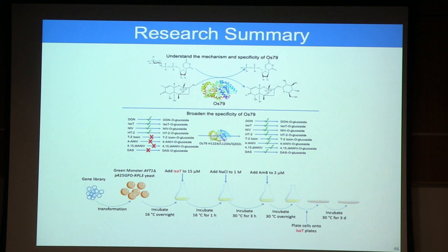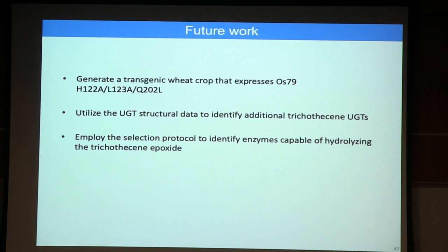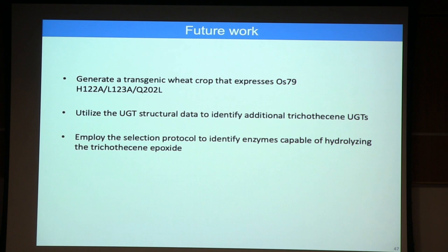In summary: I generated structural information on OS79, the UDP glucosyltransferase that glycosylates trichothecines, and broadened its specificity. This enzyme was patented and can hopefully provide resistance to a wide range of Fusarium species. I also developed a selection protocol to identify enzymes that can break the epoxide bond, which can treat already harvested grain. Future work includes generating a transgenic wheat or barley crop expressing the engineered enzyme, using structural data to identify additional broad-specificity UGTs, and using the selection protocol to identify a trichothecine depoxidase.